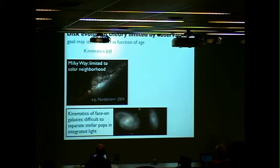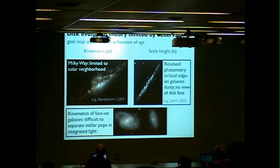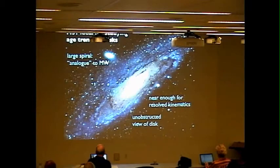You can also map the scale height of a galaxy. There's been some nice work done with resolved stellar photometry of relatively nearby galaxies. You can use photometry to separate out stars of different ages, and if the galaxy happens to be edge-on, then you can map the scale heights. But you have a similar problem here as in the Milky Way, where because the galaxy is edge-on, you don't have a great view of what's happening over the entire disk.